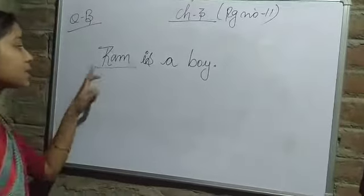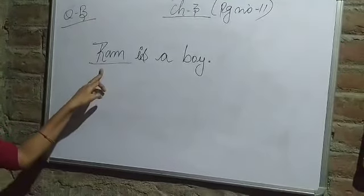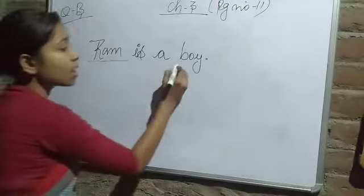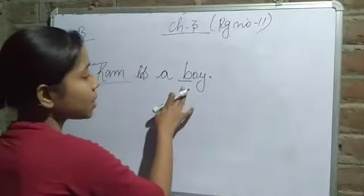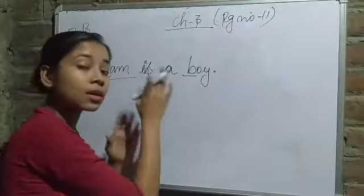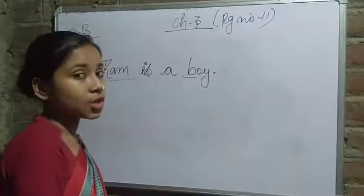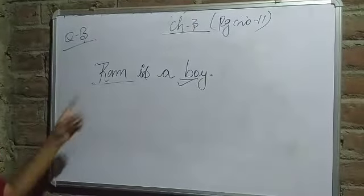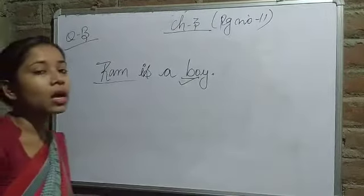But, Ram kya ho gaya? Special ho gaya. The way, Ram is a boy. Ram, ek ladka hai. Yeh bhi naming word hai, yeh bhi naming word hai, right. But, Ram, ek special name hai. Islay, iska R, capital, se start hua. Yeh, ek reason hai. Is Ram ka. Aur, yeh, yeh ek special name nahi hai. Islay, malabh, yeh ek naming word to hai, but special name nahi hai. Islay, isko humne small b se likhha hai. Yeh, special name hai. Islay, yeh start kis se hua hai? R se hua hai.